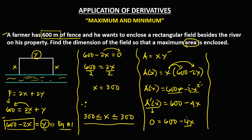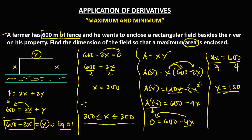Transposing negative 4x to the left gives 4x equals 600. Dividing both sides by 4, x equals 150. This is the critical value. We also need to test the endpoints x equals 0 and x equals 300 to determine which value gives the maximum area.